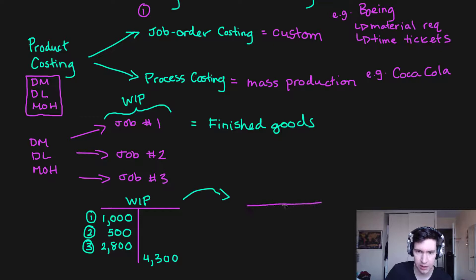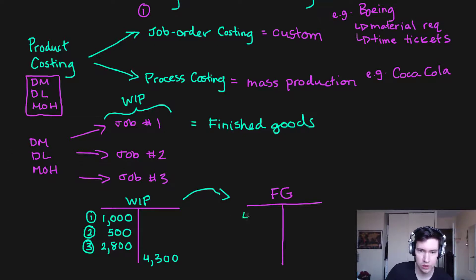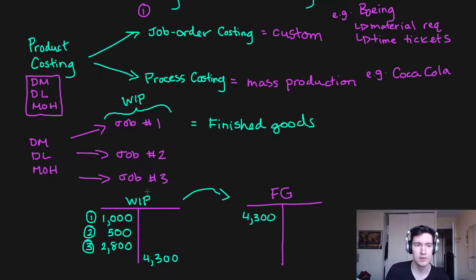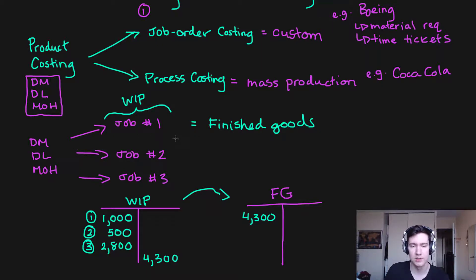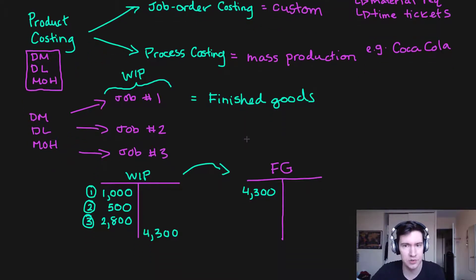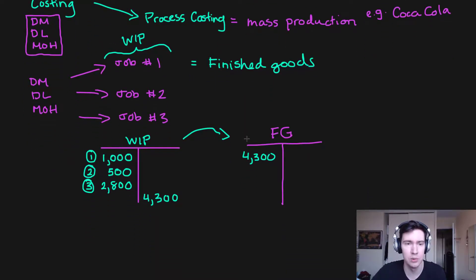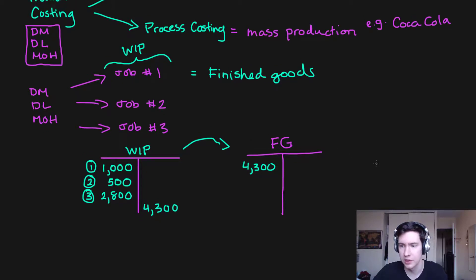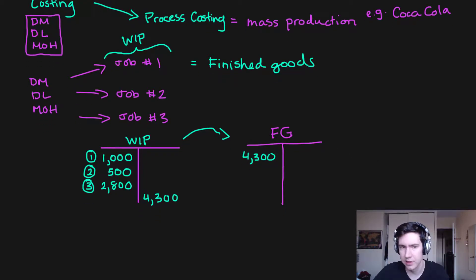Once the job is finished, it's going to become finished goods. We credit forty-three hundred and remove all of it from work in process, transferring it to a finished goods account. That's the flow of costs in a job order costing system: starting with raw materials, accumulating and assigning to work in process, and then from work in process assigning to finished goods. Fairly simple compared to process costing.